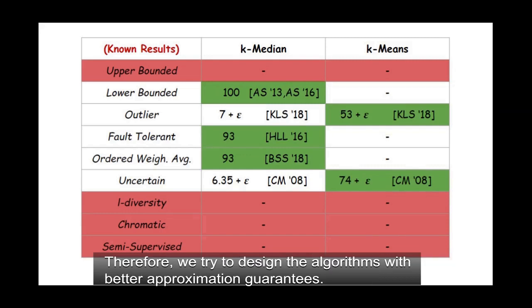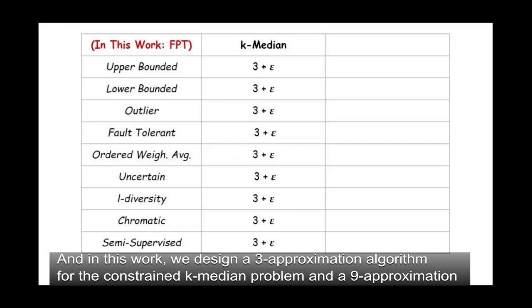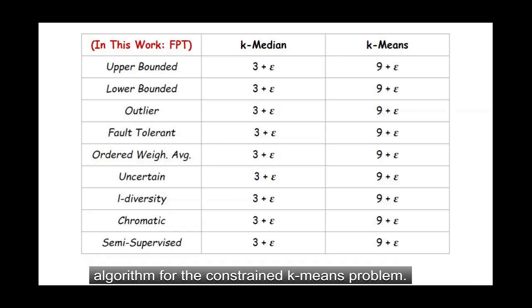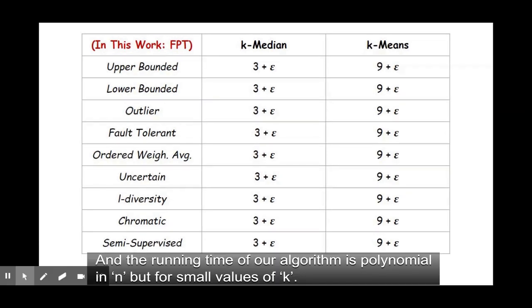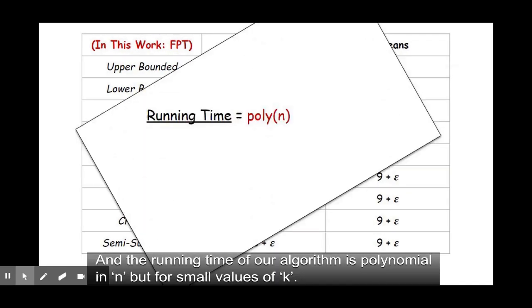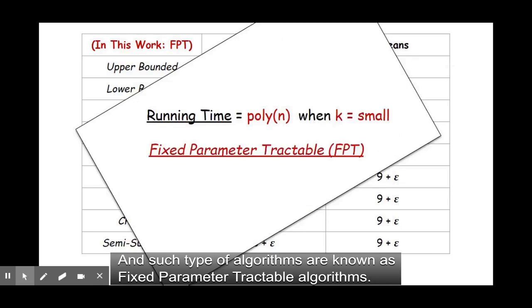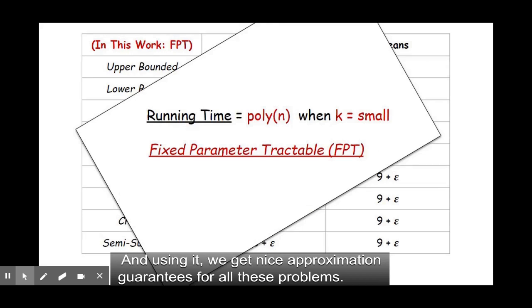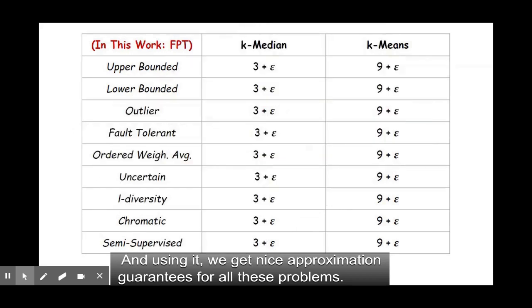Therefore, we try to design algorithms with better approximation guarantees. And in this work, we design a 3-approximation algorithm for the constrained k-median problem and a 9-approximation algorithm for constrained k-means problem. And the running time of our algorithm is polynomial in n, but for small values of k. And such type of algorithms are known as fixed-parameter tractable algorithms and using it we get nice approximation guarantees for all these problems.